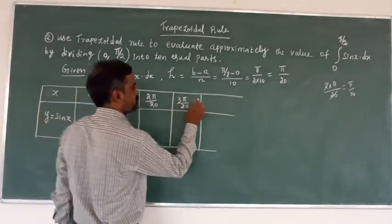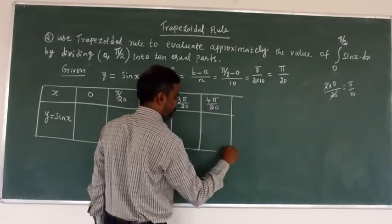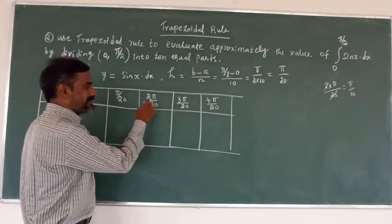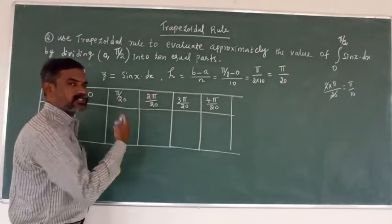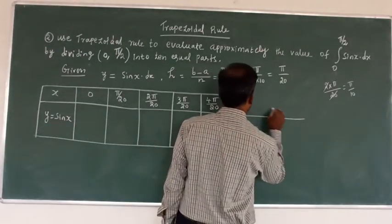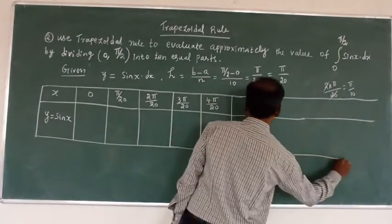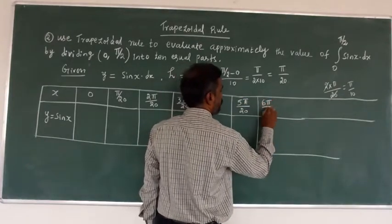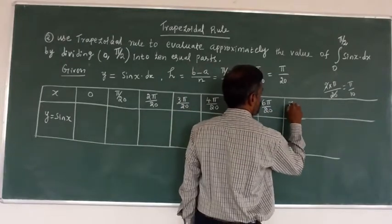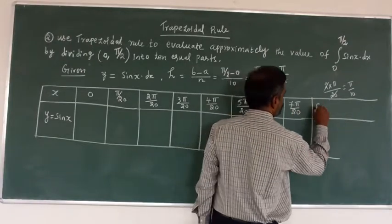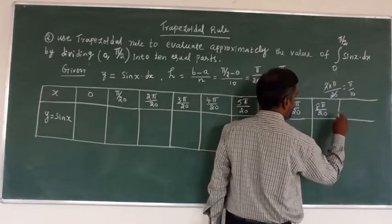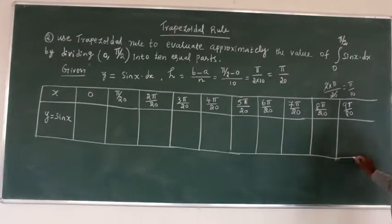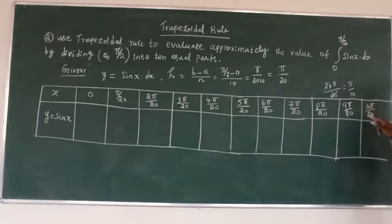Continuing the table for all 10 intervals: 4π/20, 5π/20, 6π/20, 7π/20, 8π/20, and 9π/20. We can directly substitute or simplify each fraction.